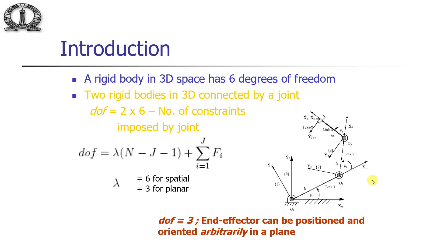A rigid body in 3D space has 6 degrees of freedom. Two rigid bodies connected by a joint will have 2×6 minus the number of constraints imposed by the joints. The degree of freedom is given by the well-known Grubler's formula. For example, in a 3R robot with 4 links, n=4, j=3, and fi=1+1+1, with lambda=3, giving 3 degrees of freedom — meaning we can position and orient the end effector arbitrarily in a plane.